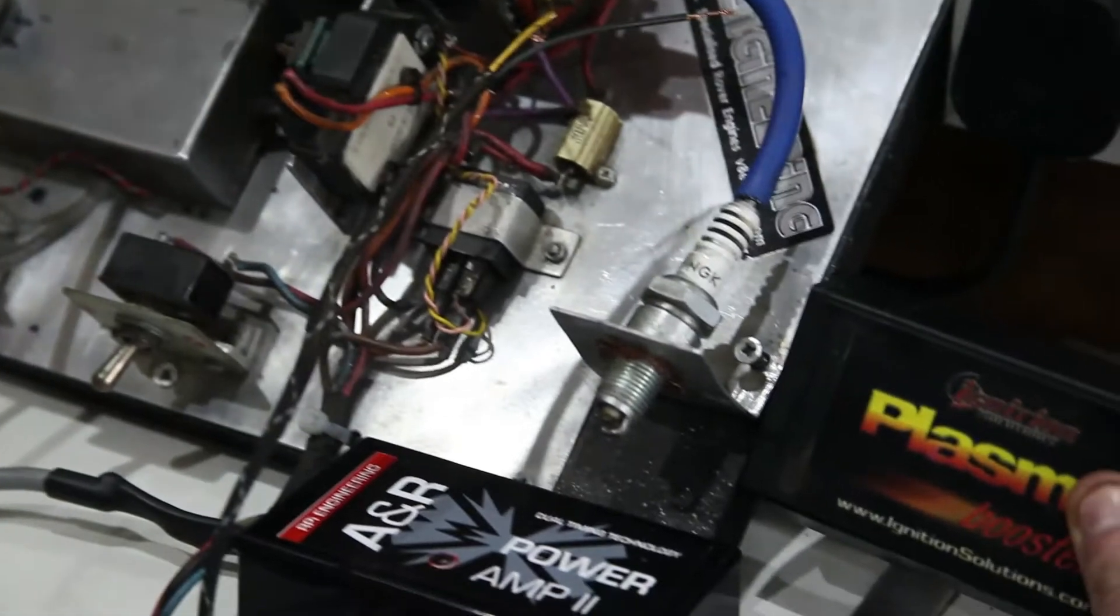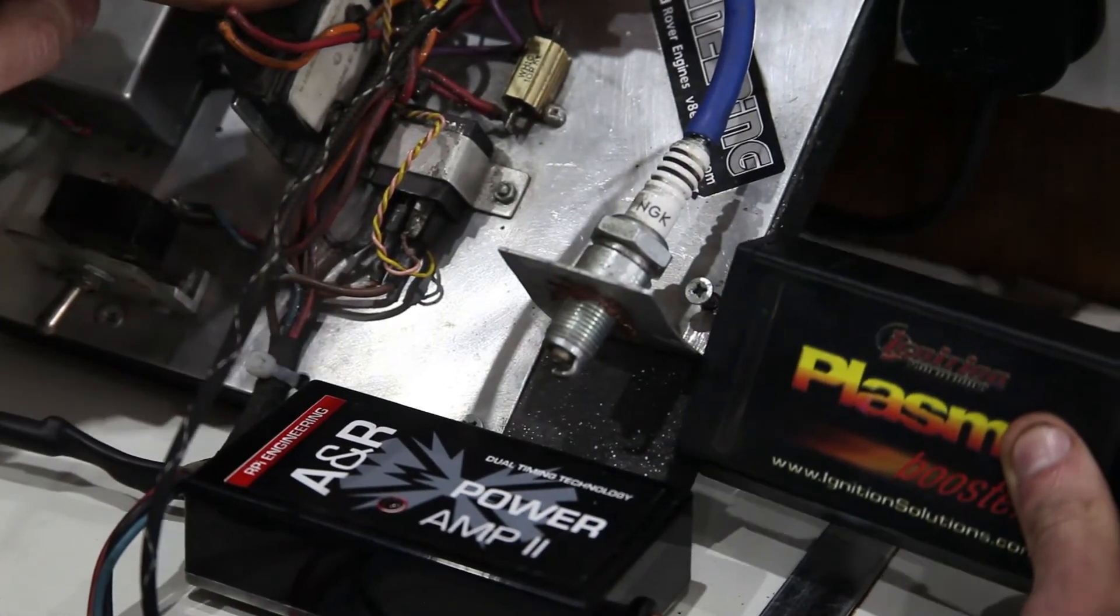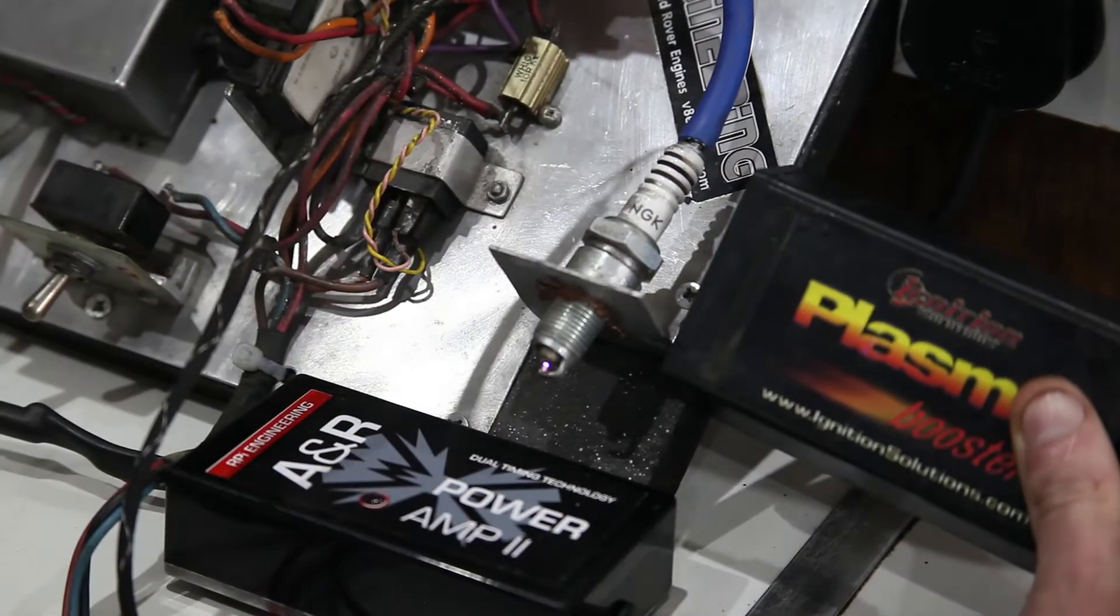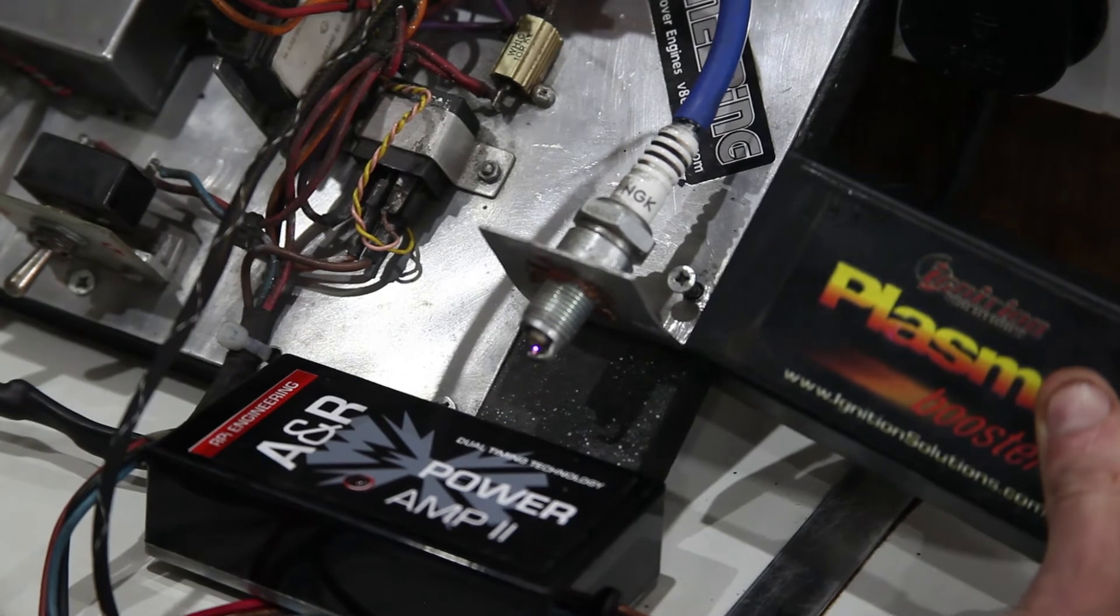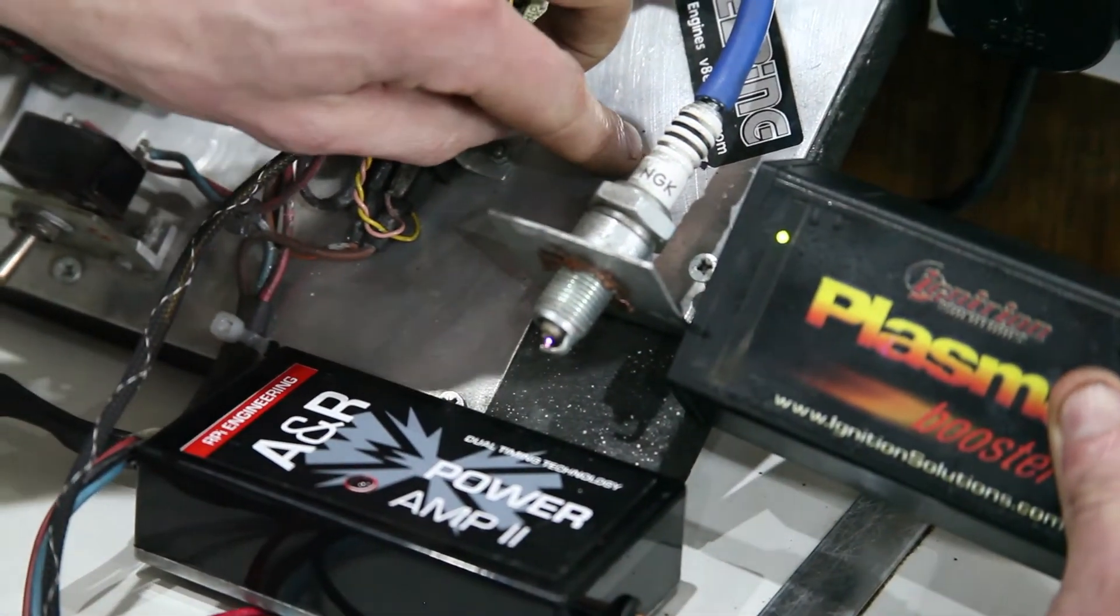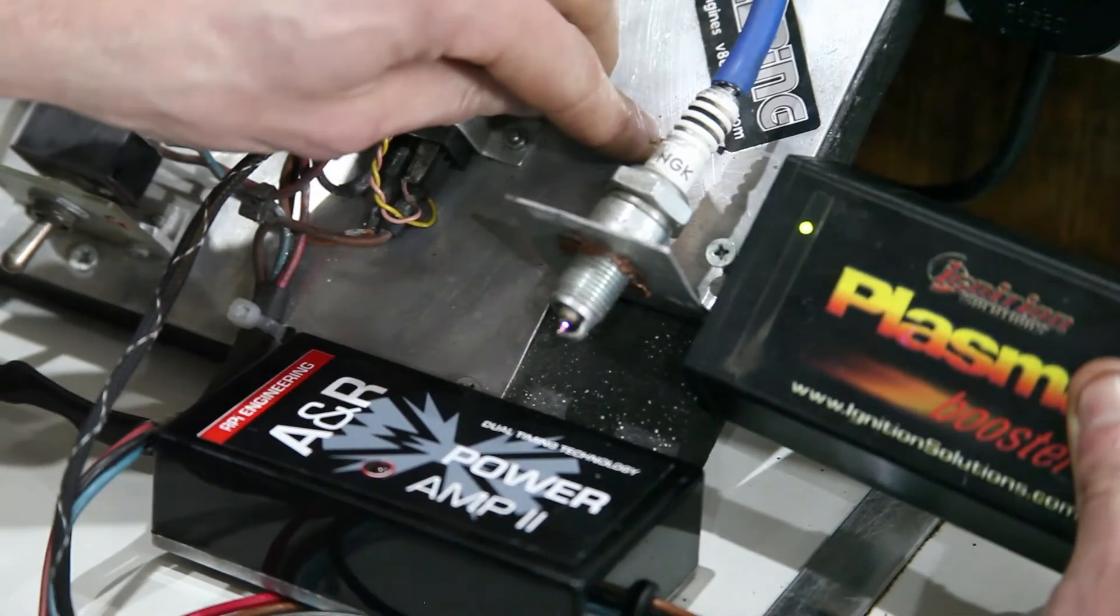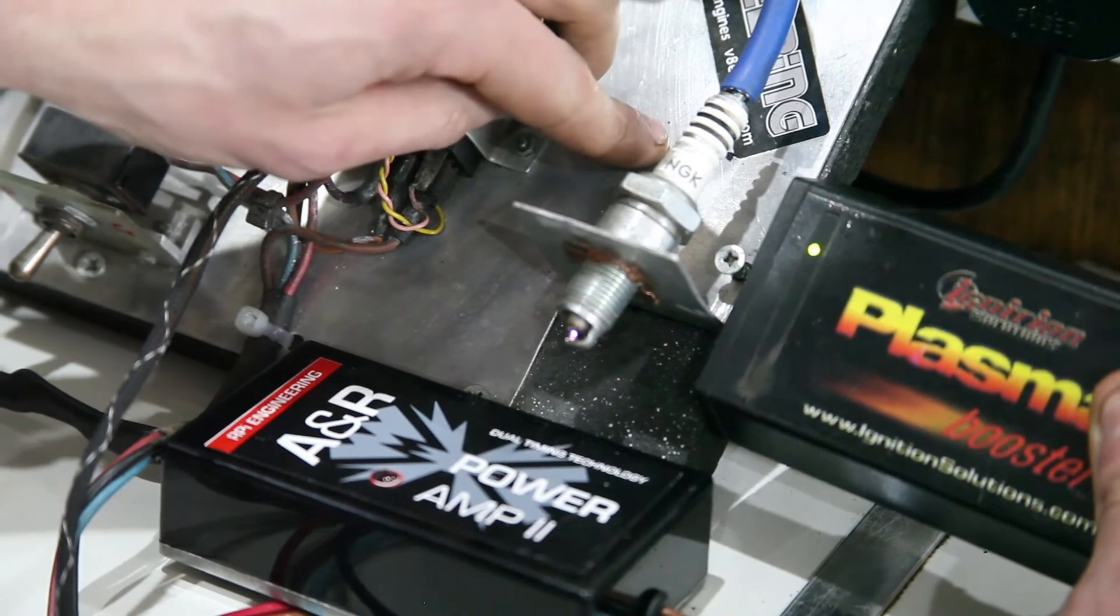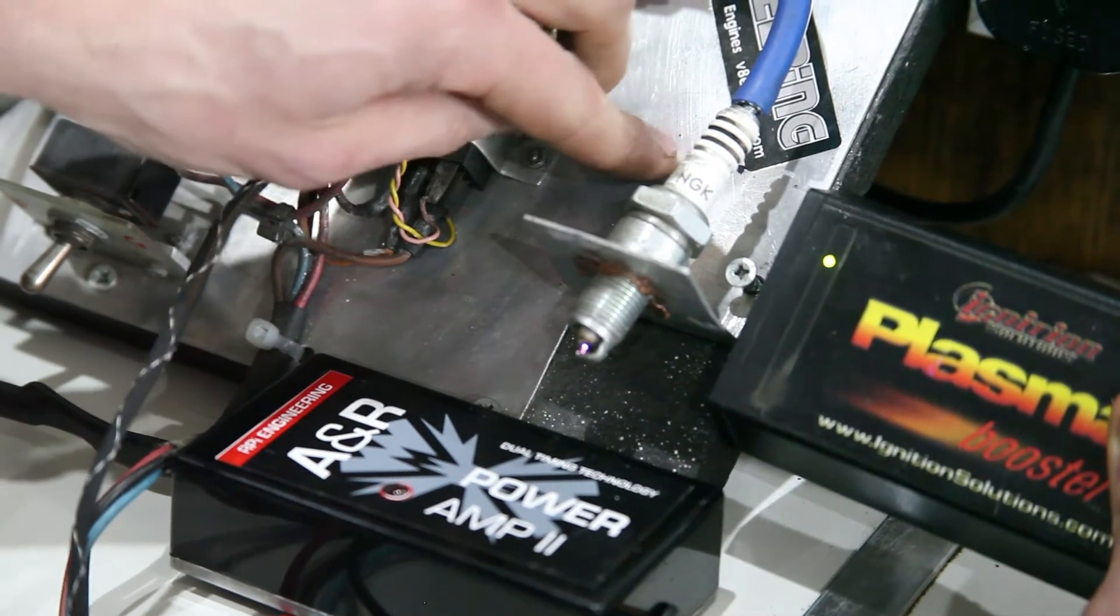The green LED is not on because I've not earthed it yet, and the spark is the standard spark from the Lucas module. So we'll just touch this to earth and the green light's come on to say it's amplifying the spark. But as you can clearly see, I'm coming on and off here and there's no spark difference at all.